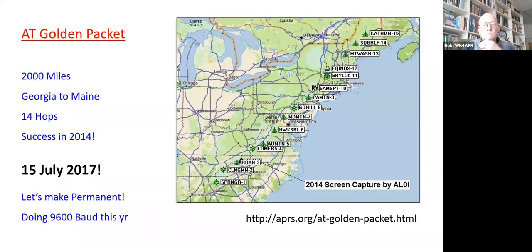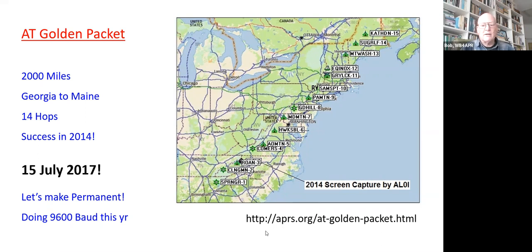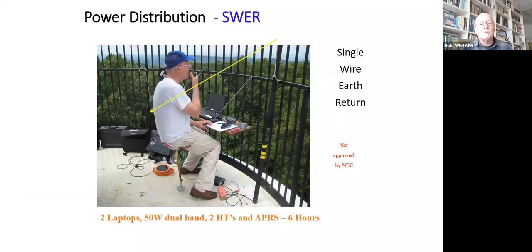Now switching to another use of APRS — the Golden Packet event, where we demonstrated setting up an APRS network on the fly to communicate along the Appalachian Trail from Maine to Georgia. During the third weekend every July, about 14 to 15 of us climb or drive to nearby parking lots along the AT, set up our APRS network, and attempt to communicate end to end. The toughest job is climbing Mount Katahdin — a 5,000-foot mountain — getting up for operating at noon, and getting back down before sunset.